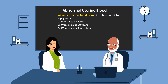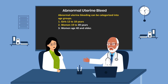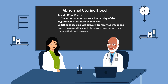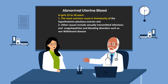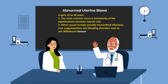Abnormal uterine bleeding can be categorized into three groups: girls 12 to 18 years, women 19 to 39 years, and women age 40 and older. The most common cause of abnormal uterine bleeding in the 12 to 18 age group is immaturity of the hypothalamic-pituitary-ovarian axis. Other causes include sexually transmitted infections, coagulopathies, and bleeding disorders such as von Willebrand disease.